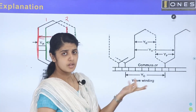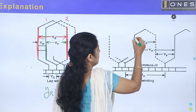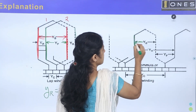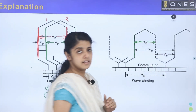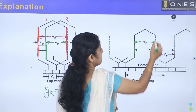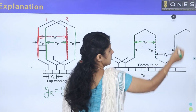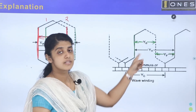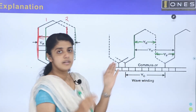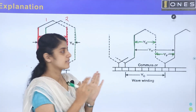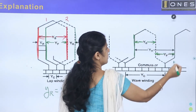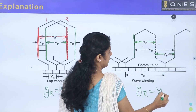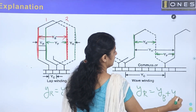Now for wave winding: the back pitch is the first coil, and the front pitch involves the second conductors. The resultant pitch in wave winding is yb plus yf.